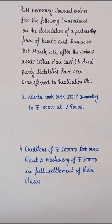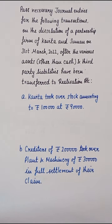पहला transaction: Kavitha took over stock amounting to Rs.1,00,000 at Rs.90,000. कविता ने 1,00,000 के stock को Rs.90,000 में ले लिया। अब stock तो पहले ही Realization Account में डालके close हो चुका है, तो अब जब stock realized होगा तो उसकी journal entry में stock का नाम नहीं आएगा — नाम आएगा Realization Account का।